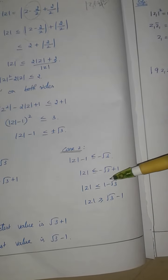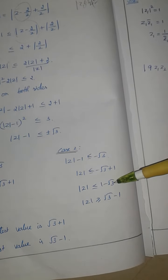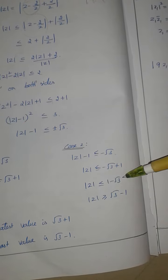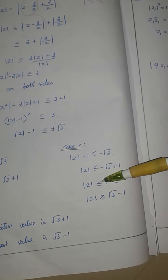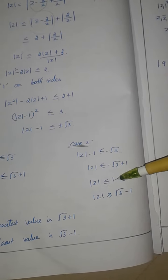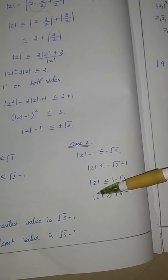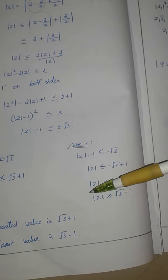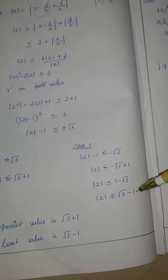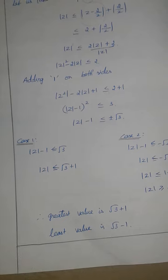Case 2: mod Z minus 1 less than or equal to minus root 3, giving 1 minus root 3. Since we change the sign, the inequality becomes greater than or equal to, so mod Z is greater than or equal to root 3 minus 1. Therefore, the least value is root 3 minus 1 and the greatest value is root 3 plus 1.